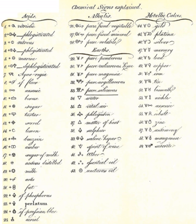Alchemical symbols, originally devised as part of alchemy, were used to denote some elements and some compounds until the 18th century. Although notation like this was mostly standardized, style and symbol varied between alchemists, so this page lists the most common.